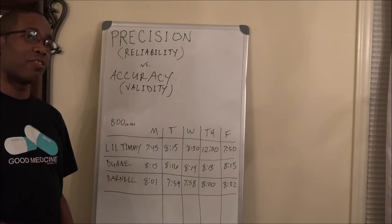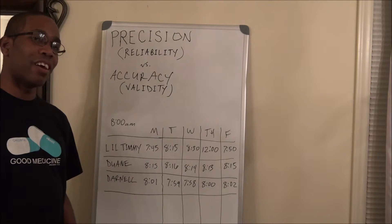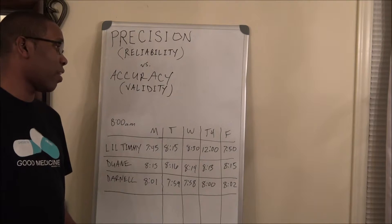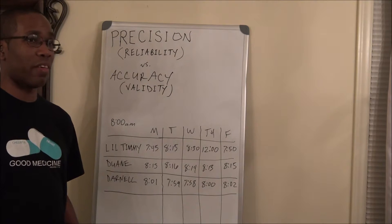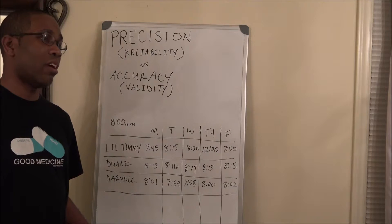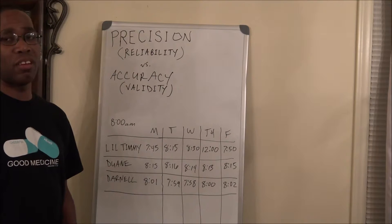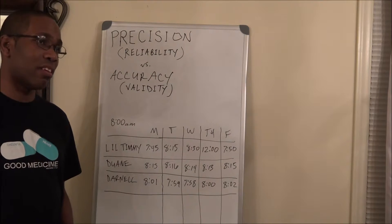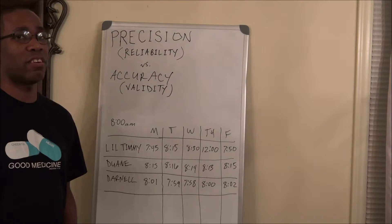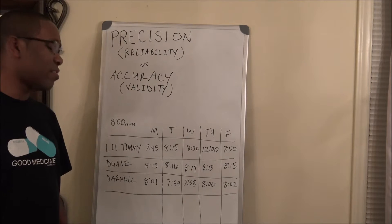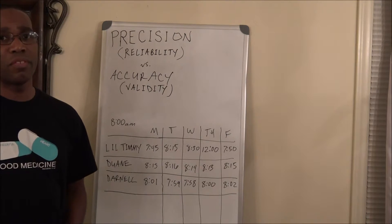In this example, little Timmy, although he was early on a couple of days, he's not very reliable — those times he came in are not close to each other. He's also not very accurate, or not very valid, because none of the numbers are really near 8 o'clock. They're spread out, not close together, and they're not near the intended target, the intended time when class starts at 8 o'clock.